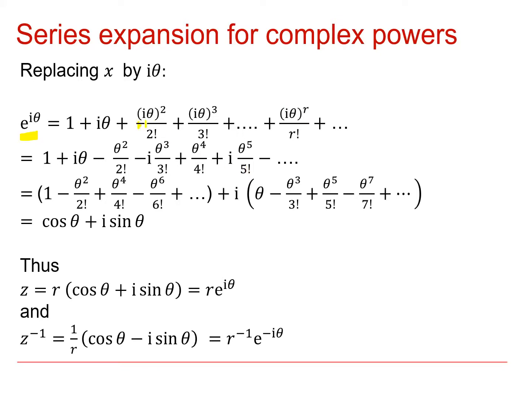And if I now sort out what happens in these cases, i theta all squared is going to give me minus theta squared. i theta all cubed is going to give me minus i theta cubed. And of course I've still got my denominators coming through here. When we wrap around to i theta to the 4 it goes back to being positive and plus i theta to the 5 and so on.